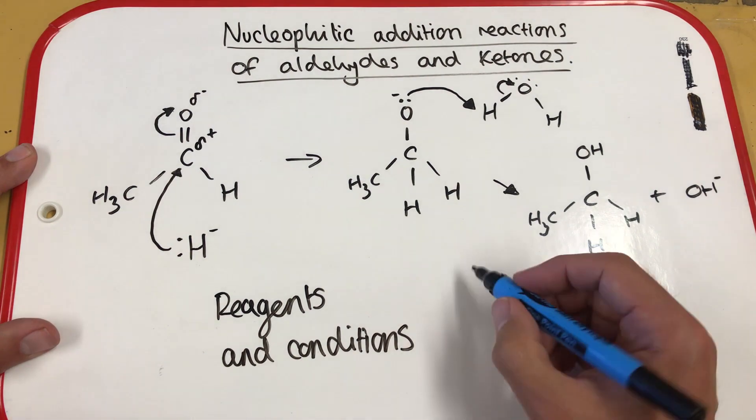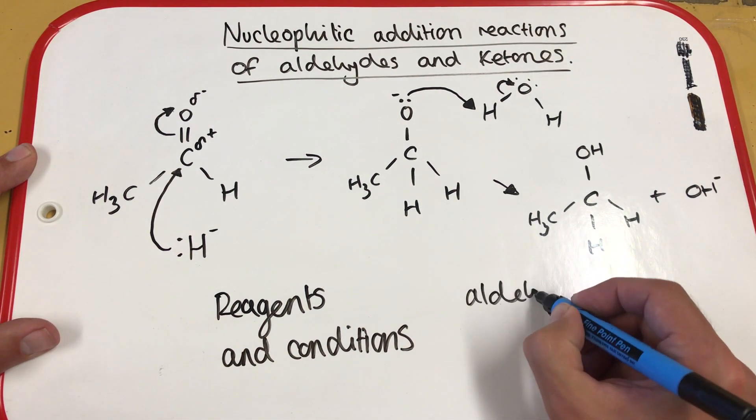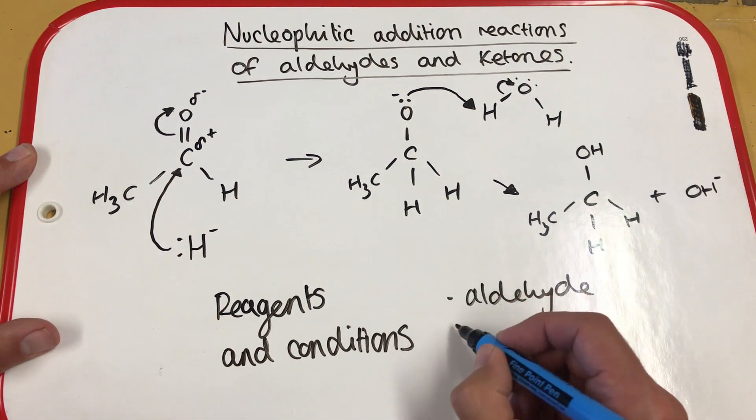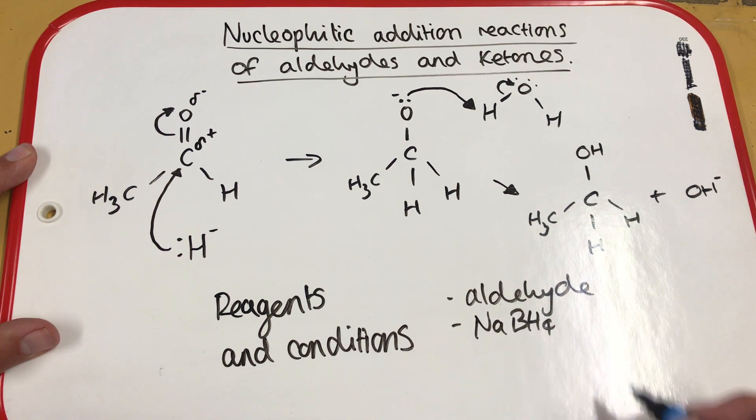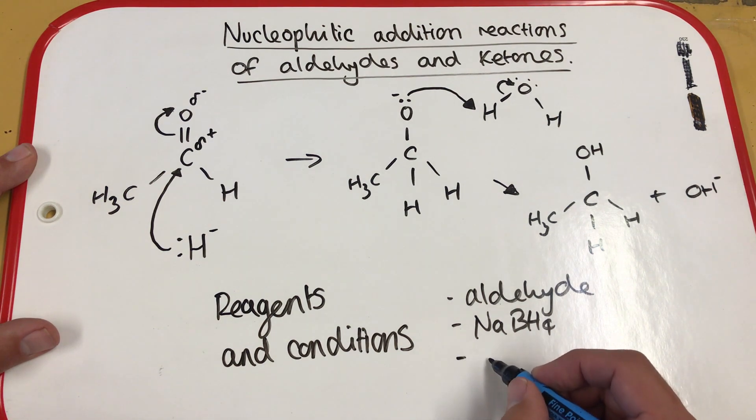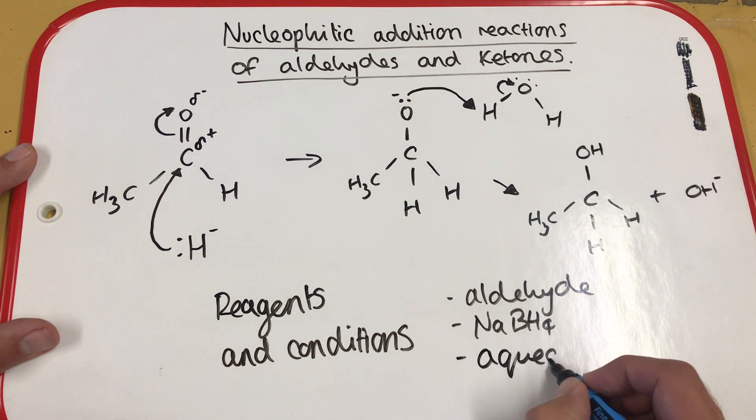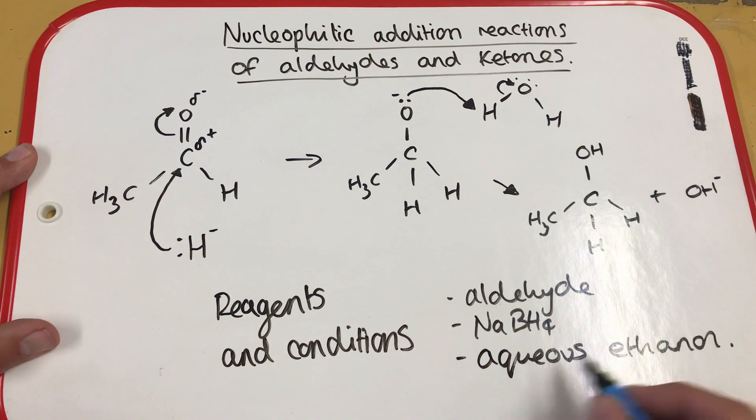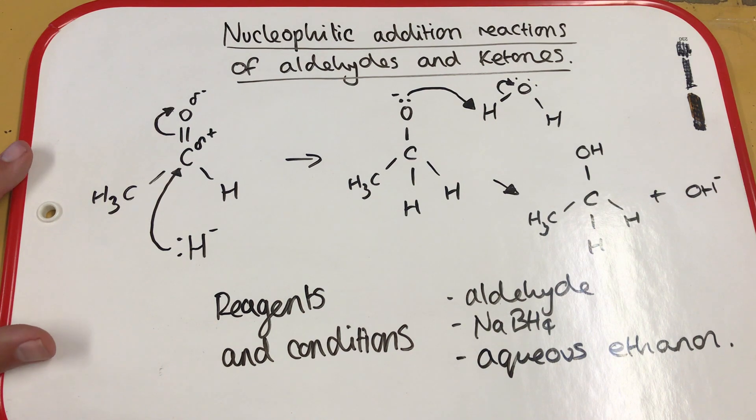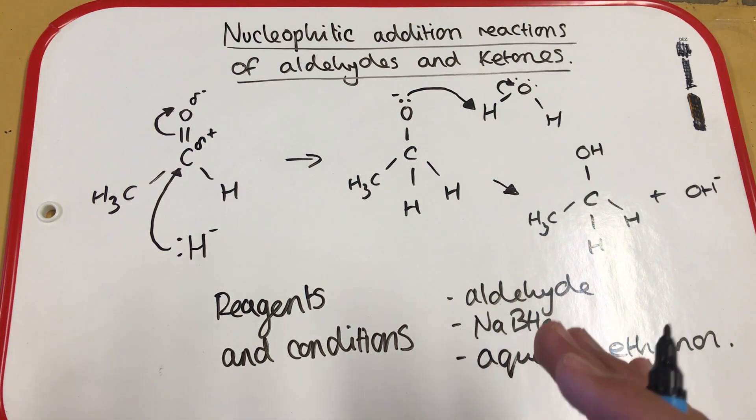So we've talked about the reagents. We need an aldehyde. We need NABH4, our reducing agent, which is the source of the hydride ion. And we also want this to be aqueous ethanol. So this is our source of water molecules. So this is the mechanism for aldehydes.